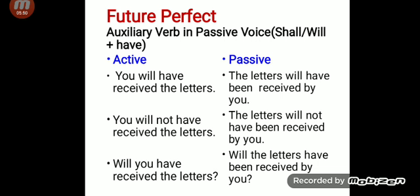Now the negative sentence: You will not have received the letters. Here, you is the subject, will is the main auxiliary verb, not, then have, and received is the main verb in verb's third form, and the letters is the object. In passive form: the letters is converted to the subject. Then will not have been — will is the main auxiliary, not, have is the primary auxiliary, been — then received as verb's third form, then by you as the object.